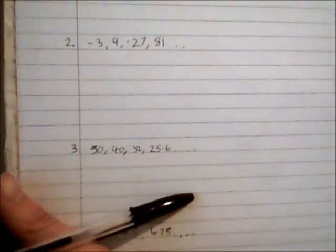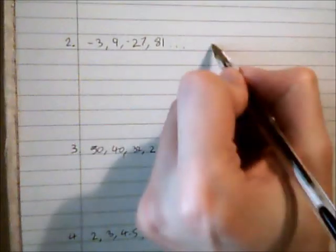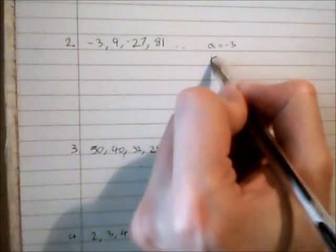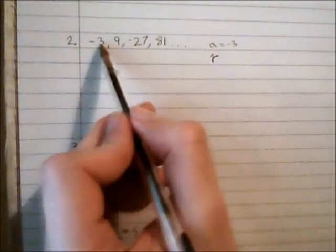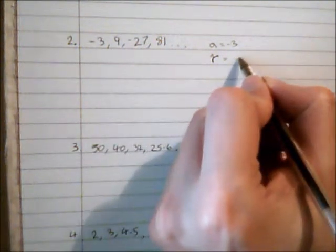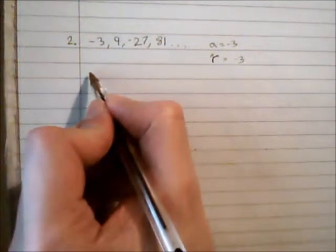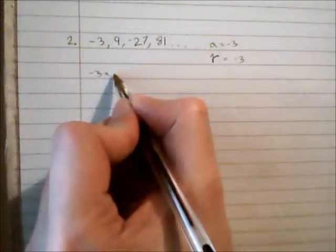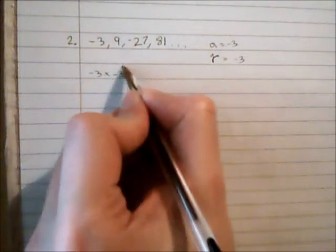For this second example, we're going to go through the same process. So we're going to identify a, which is negative 3, and the value of the common ratio, r. So what are we multiplying by? We're multiplying by negative 3. So this is negative 3 times negative 3 to the power of n minus 1.